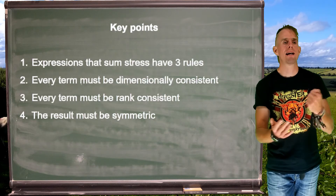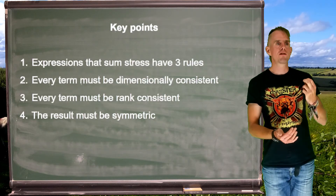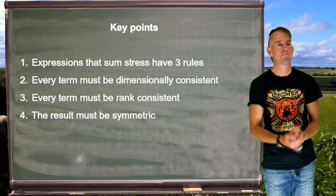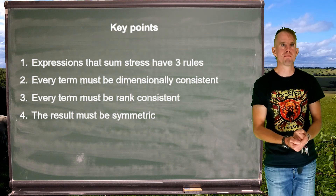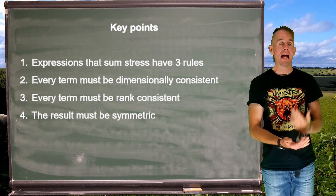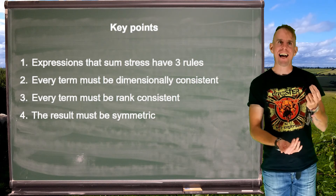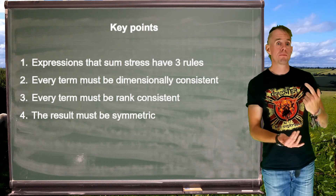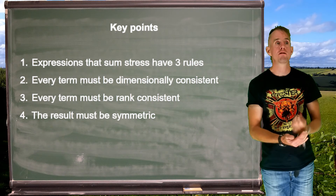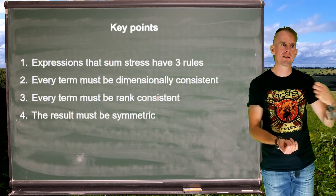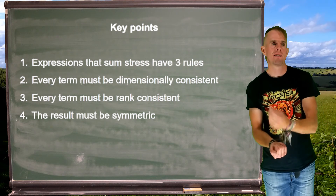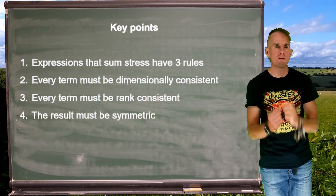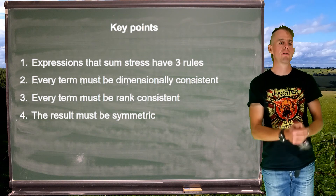Let's recap some key points. Expressions that sum to stress have three rules. Rule number one: every term must be dimensionally consistent. Rule number two: every term that adds together has to be rank consistent — you can't add scalars to vectors to tensors without ensuring there's a means of doing it correctly. Rule number three: the result must be symmetric.